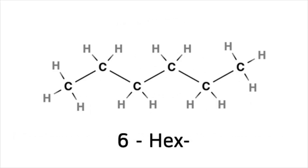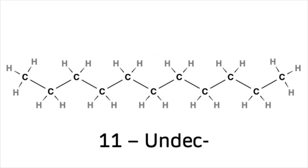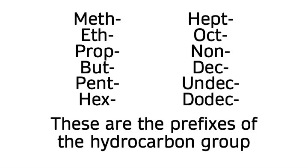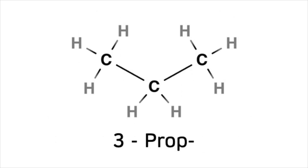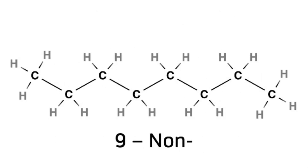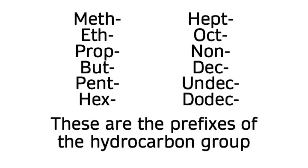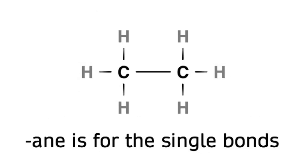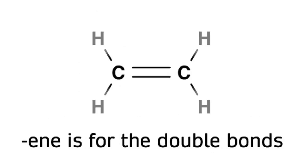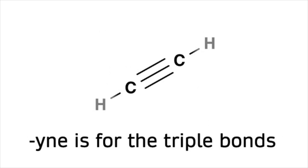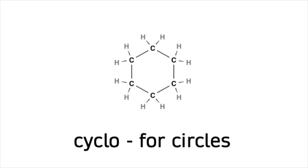Meth-eth-prop-but-pent-hex-hept-oct-non-dec-undec-dodec — these are the prefixes of the hydrocarbon group. -Ane is for the single bonds, -ene is for the double bonds, -yne is for the triple bonds, and cyclo for rings.